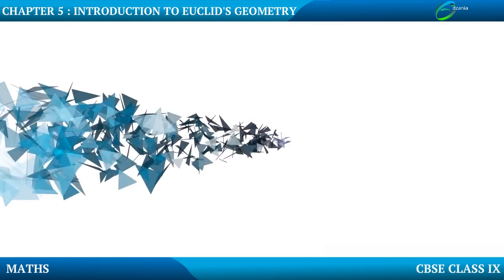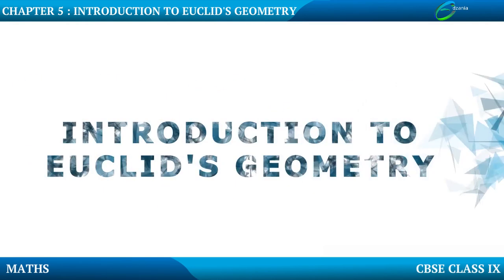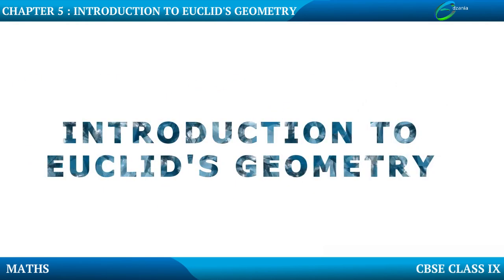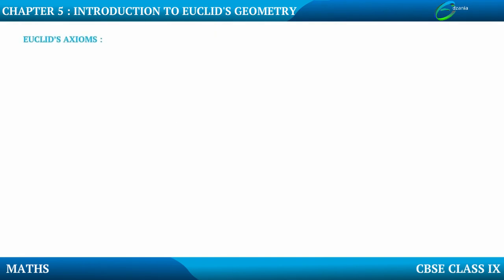Let us start with a new chapter, Euclid's Geometry — Chapter 5. Axioms are facts or true statements. So let us see the first axiom: things which are equal to the same thing are equal to one another.